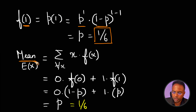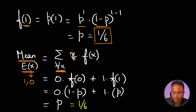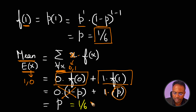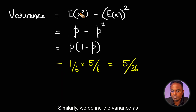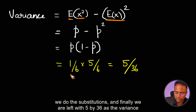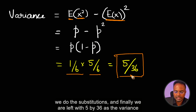We can also compute the mean of the Bernoulli distribution, which is the expected value. Since x can take only 0 or 1, we sum x × F(x) for all values of x. The x = 0 term cancels out, leaving 1 × P, which turns out to be 1/6 in this case. Similarly, the variance is defined as E(x²) minus the square of E(x). After substitutions, we are left with 5/36 as the variance.